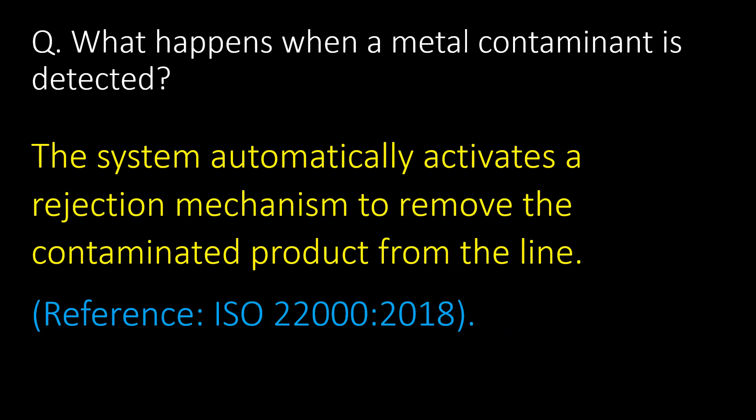What happens when a metal contaminant is detected? The system automatically activates a rejection mechanism to remove the contaminated product from the line. Reference: ISO 22000:2018.